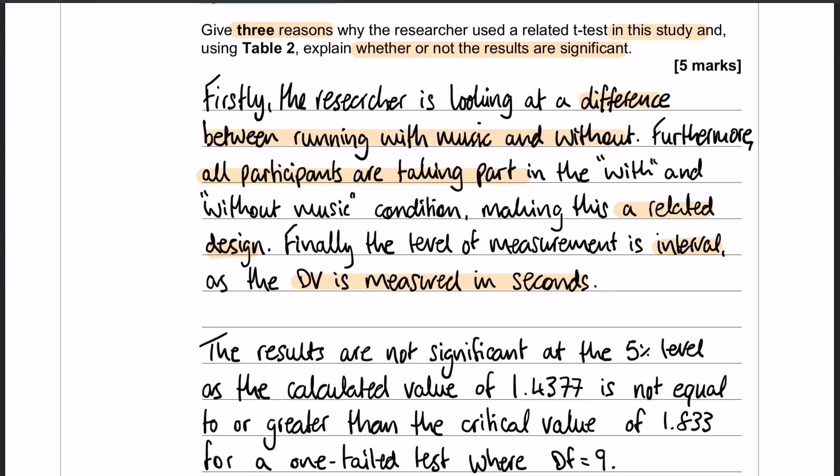So there are our three reasons, first three marks achieved. Now we need to move on to whether or not it's significant. That's going to make up the second part of the answer and give us our final two marks. We need to establish that the results are not significant. We did that earlier, and the reason that they are not significant is because the calculated value is not equal to or greater than the critical value.